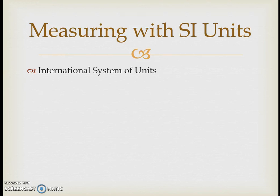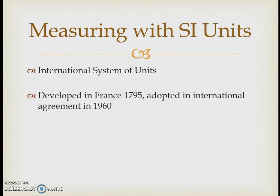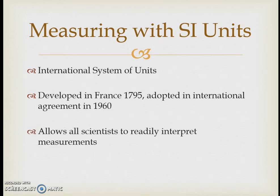In science we use SI units — Système International — an international system of units adopted in 1960, originally developed in France in 1795. It gives scientists a way to readily understand data without having to do conversions themselves; it's like everyone speaking the same language. There are six different base units: for length it's the meter (lowercase m), and for mass it's the kilogram.